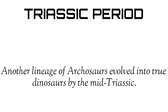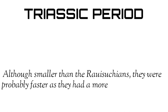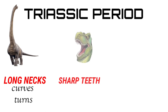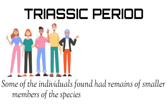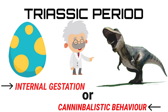Another lineage of Archosaurs evolved into true dinosaurs by the mid-Triassic. One genus, Coelophysis, was bipedal, meaning that it could walk on two legs. Although smaller than the Rauisuchians, they were probably faster, as they had a more flexible jointed hip. Coelophysis also picked up speed by having lightweight hollow bones. They had long necks with many curves and turns, sharp teeth, clawed hands, and a long bony tail. Coelophysis fossils found in large numbers in New Mexico indicated the animal hunted in packs. Some individuals found had remains of smaller members of the species inside the larger animals, and scientists are unclear as to whether this indicated internal gestation or possibly cannibalistic behavior.